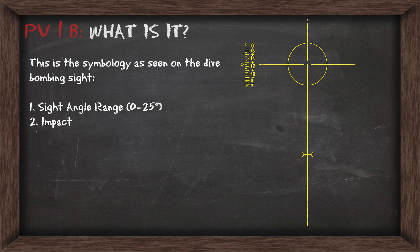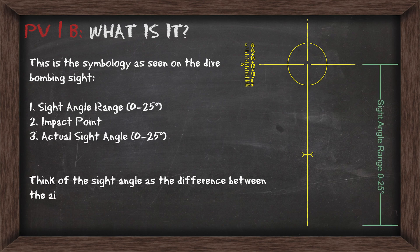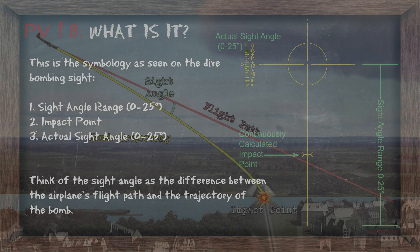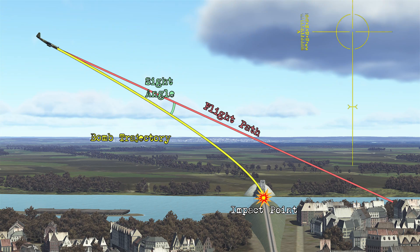Here's the symbology on the sight. You've got the sight angle range first — this runs from the middle of the sight down to the bottom. Then you've got your impact point, which is going to be continuously calculated by that bomb aiming computer. Then you've got the actual sight angle, which is where the impact point sits along the sight angle range. Think of the sight angle as the difference between the airplane's flight path and the trajectory of the bomb. I created this picture to help you visualize how all these components fit together.